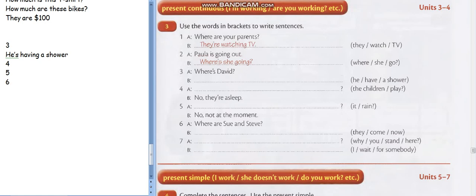Number 6. A: Where are Sue and Steve? Good. B: They are coming now. Good. Very nice. They are coming now. Very nice.